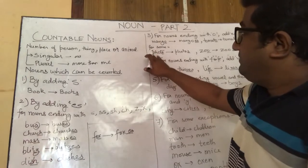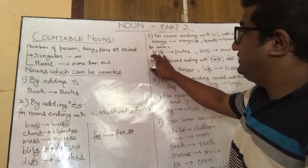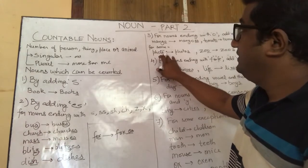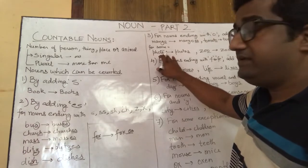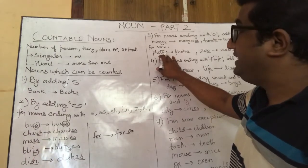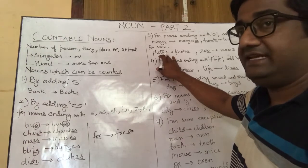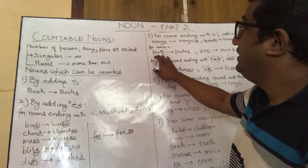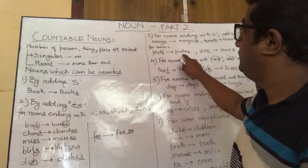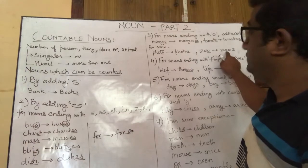But for some other nouns which end with O, we add simply S — not ES. For example, photo becomes photos, and zoo becomes zoos.